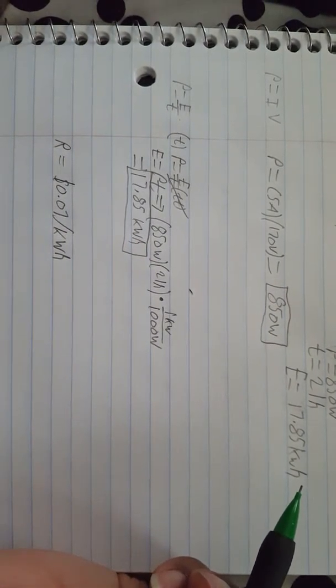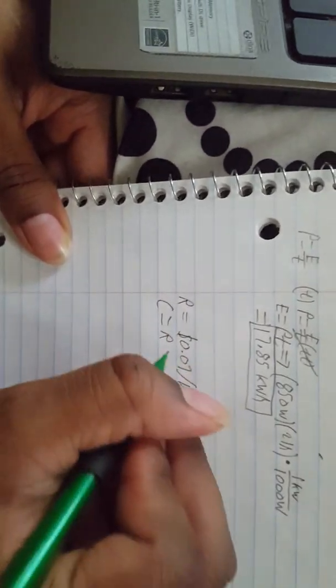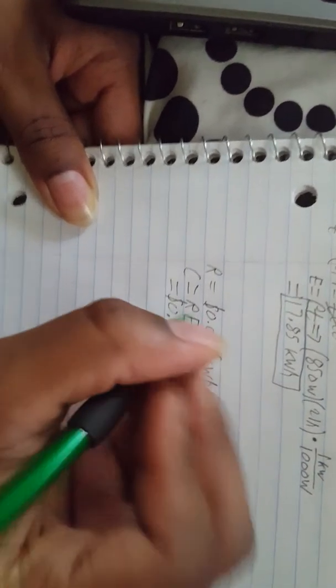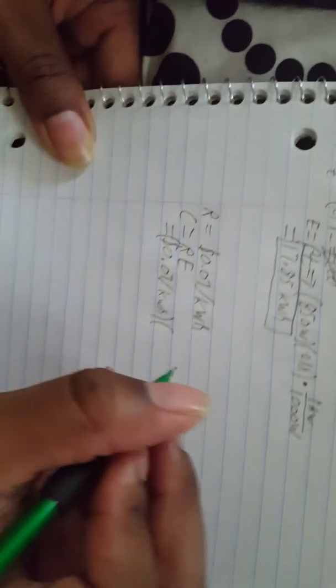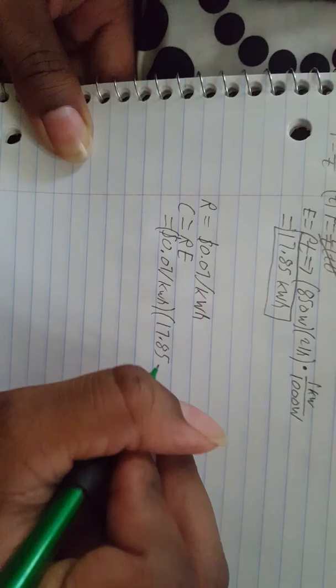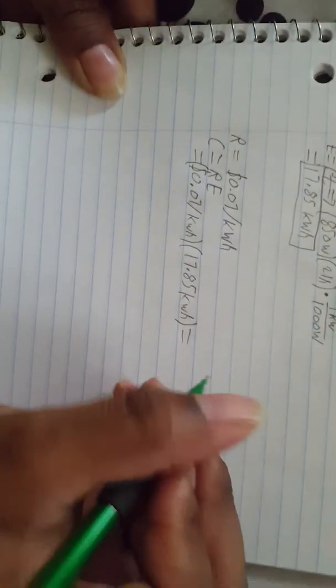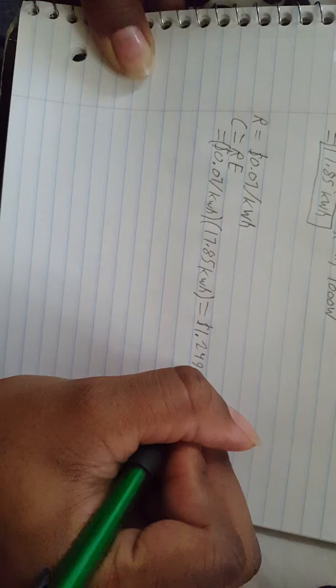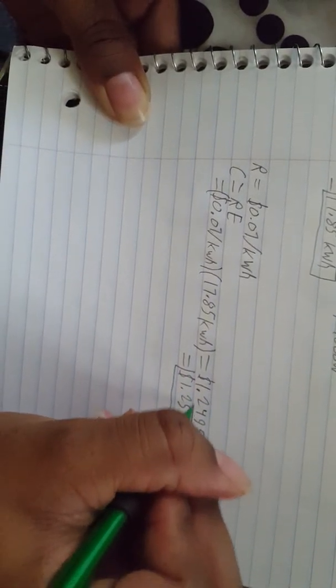Which is our E, 17.85 kilowatt hours, because this is how much energy we would need to operate this object for 21 hours. So the equation would be C equals RE. That's our R times our E, and our answer would be 1.2495, rounded to a dollar and about 25 cents for our cost.